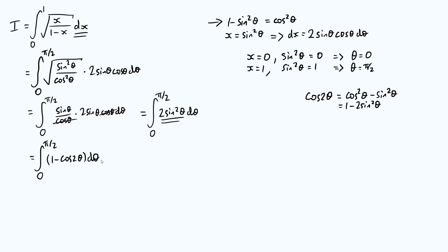All right, so let's do the actual integration now. Well, 1 just integrates to theta. Cos 2 theta integrates to half sine 2 theta. We've got this factor of a half from the chain rule, and then we have limits of 0 and pi over 2.